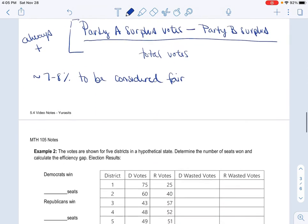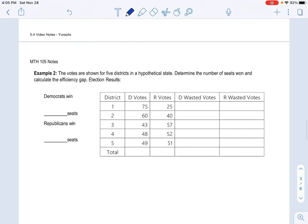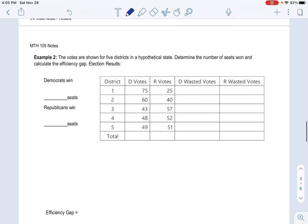Okay, so I'm going to go and we're going to do two examples. So in this example, the votes are shown for five districts in a hypothetical state. Determine the number of seats won and calculate the efficiency gap.